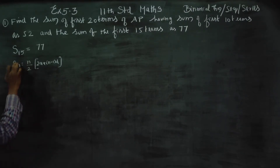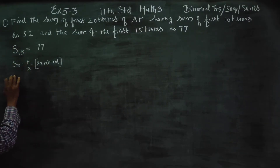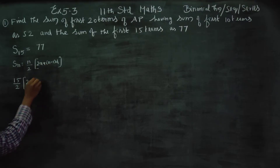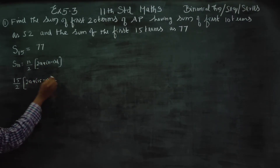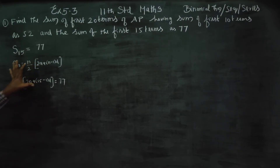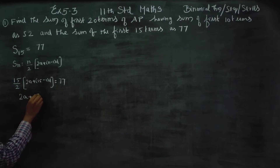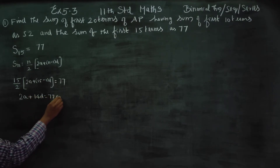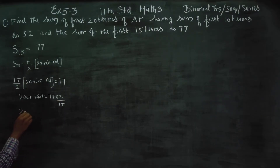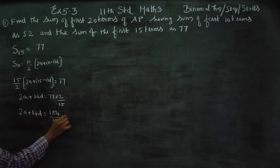For S15, instead of N we use 15. So S15 is equal to 77. Cross multiplying: 2A plus 15 minus 1 is 14D, equal to 77 into 2 by 15. So 2A plus 14D is equal to 154 by 15. This is equation number 1.